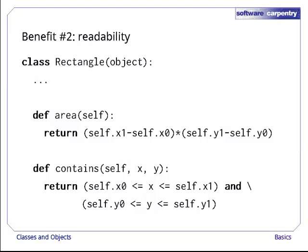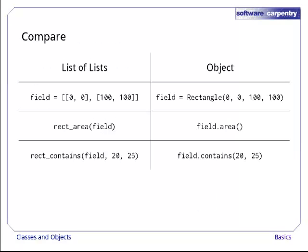The second advantage of classes over raw data structures is readability. If our program works with rectangles' areas and checks to see if one rectangle contains another, we can add those methods to our class. If you compare the list of lists approaches on the left with the object-oriented approach on the right, I think you'll agree that the second is a lot easier to understand.